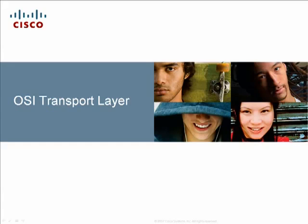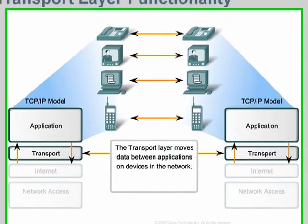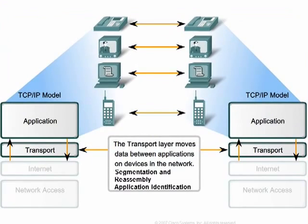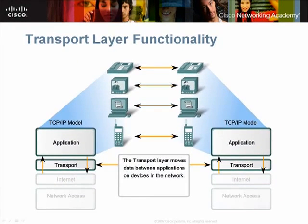This video presents the transport layer mechanisms, services, and protocols that support this end-to-end connectivity. The primary responsibilities of the transport layer include tracking the individual communication between applications on the source and destination hosts, segmenting and reassembling the segments into streams of application data, and identifying the different applications associated with data.